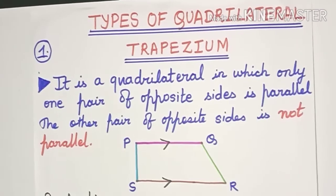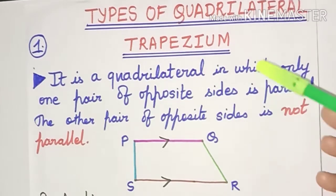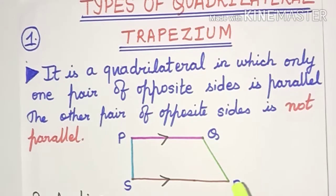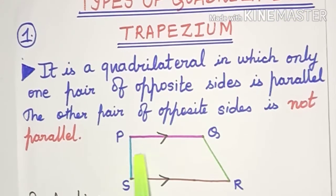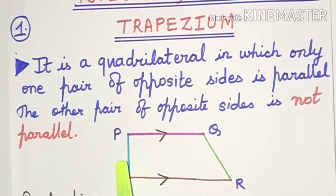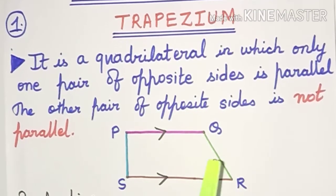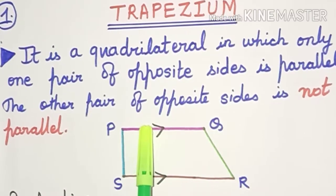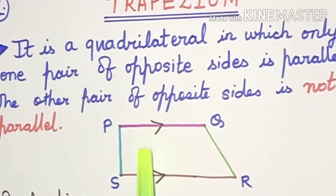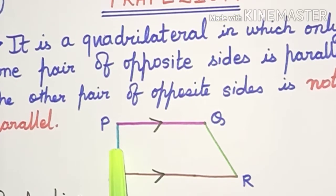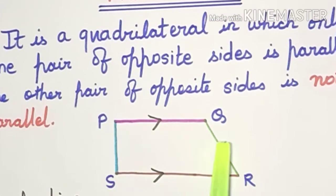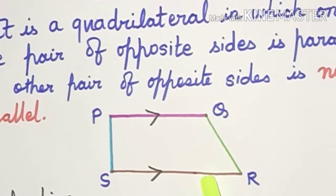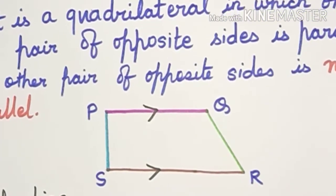The first type of quadrilateral we are going to study is the trapezium. A trapezium is that quadrilateral in which only one pair of opposite sides are parallel while the other pair is not parallel. If you look at this quadrilateral, these two opposite sides are parallel to each other whereas these two sides are not. So this becomes a trapezium — only one pair of opposite sides are going to be parallel.